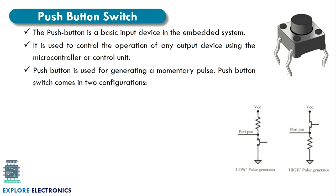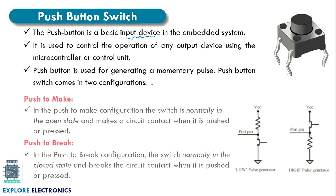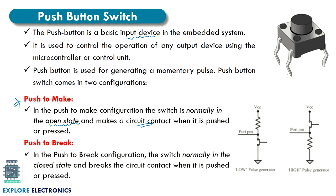Next is the push button switch. This push button switch is used as an input device — we can use it to give some input to the microcontroller and to generate a momentary pulse. Push button switches come in two configurations: push-to-make and push-to-break. In the push-to-make configuration, the switch is normally in the open state; once we push it, it makes a circuit contact and the switch is closed. In push-to-break, the switch is generally in the closed state; once we press it, it opens or breaks the circuit connection.